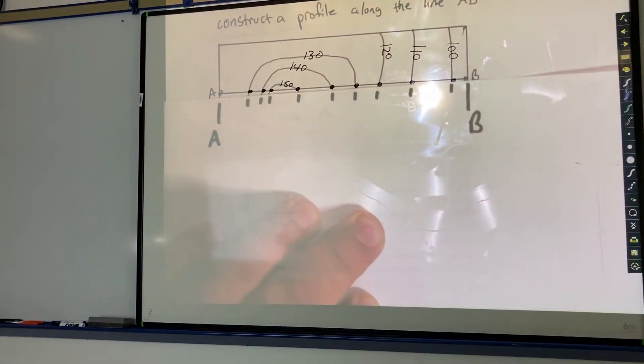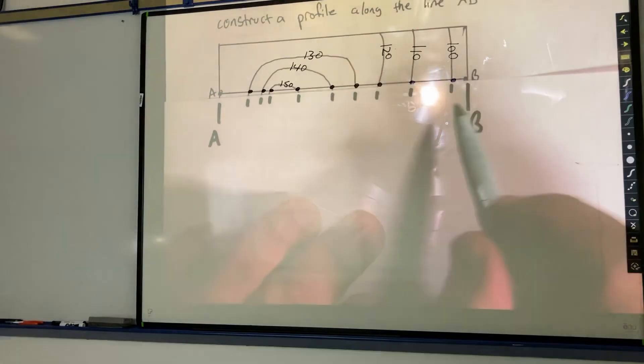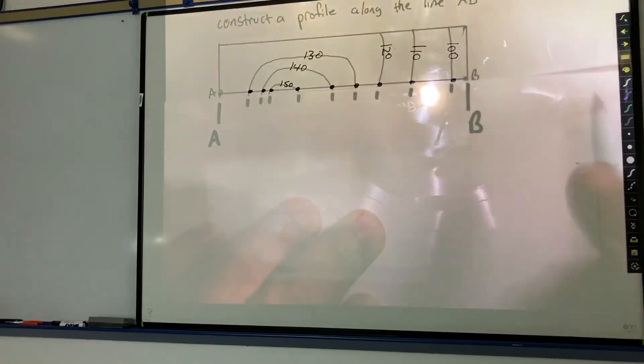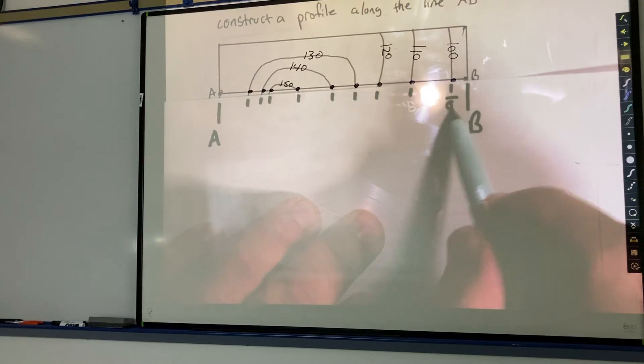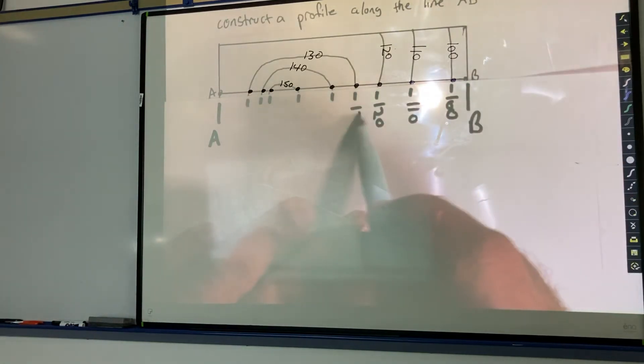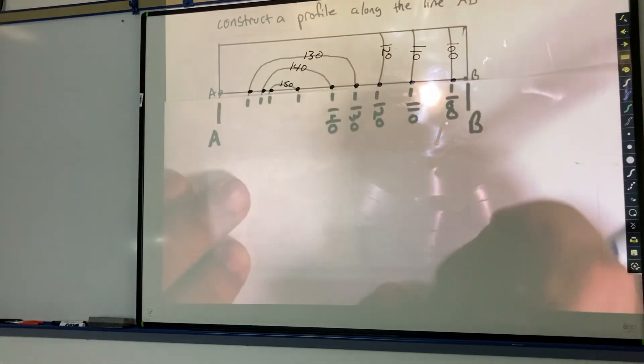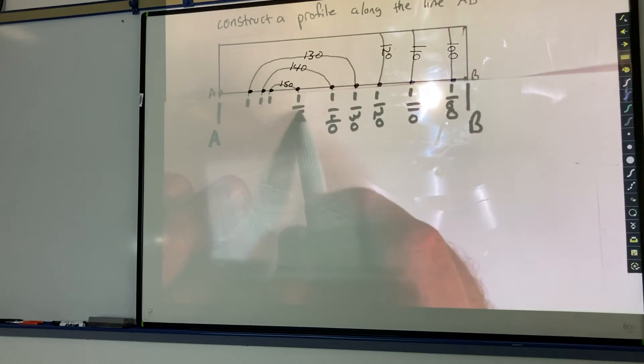Next thing I'm going to do is label the value of those. So again, this was the 100, that's the 110, the 120, 130, 140, 150. Now this is the same line as that one, so this is 150 also. This is 140 and that's 130.